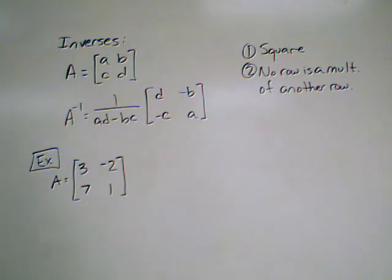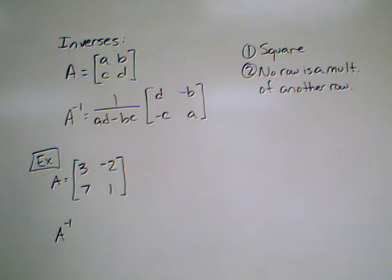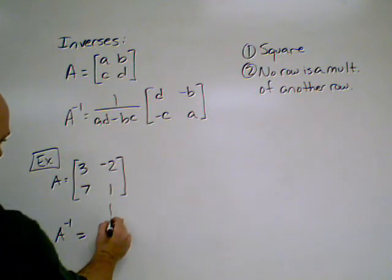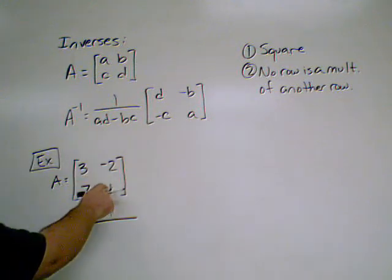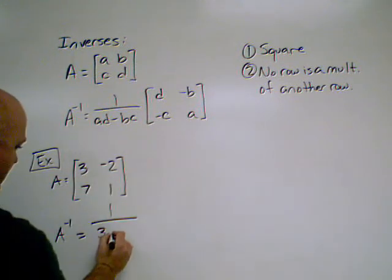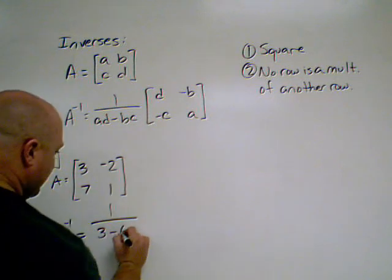Now if we apply our formula, A inverse is going to equal 1 over ad, which is 3 times 1, which is going to be 3, minus bc. So negative 2 times 7, which gives us negative 14.